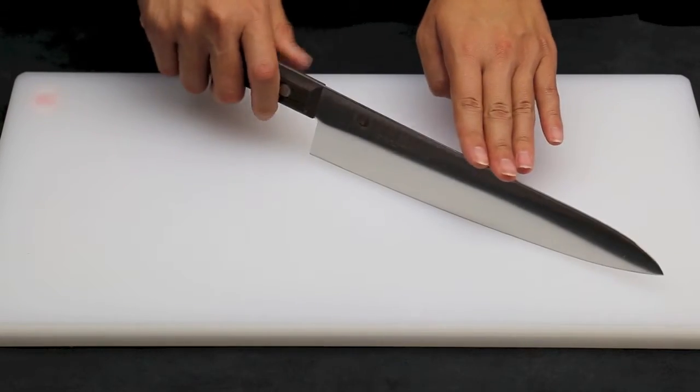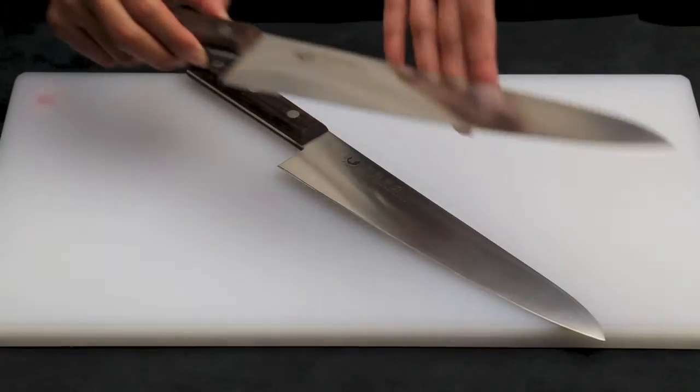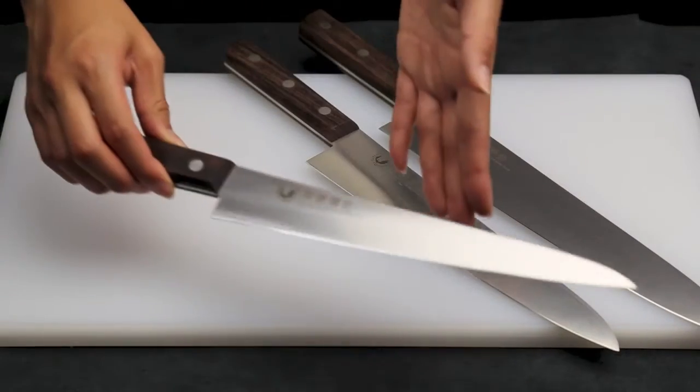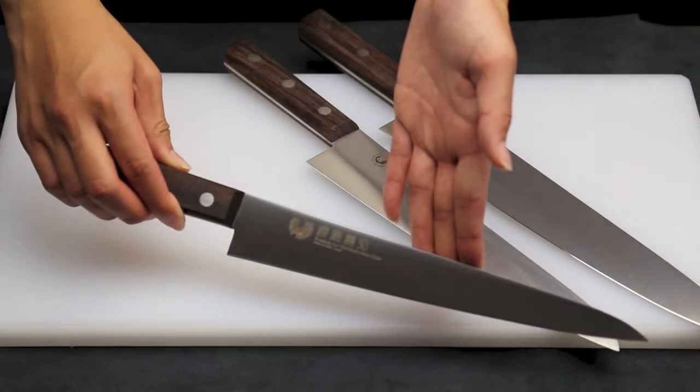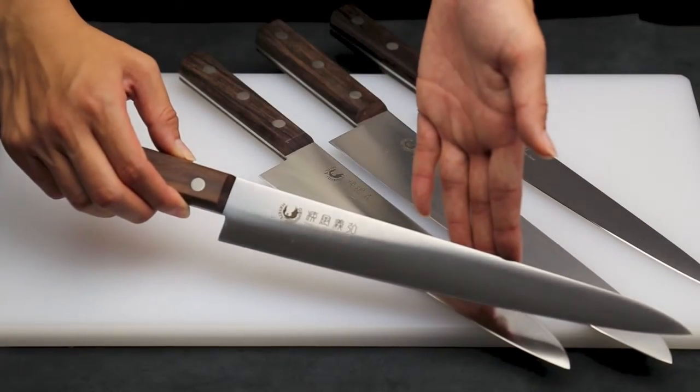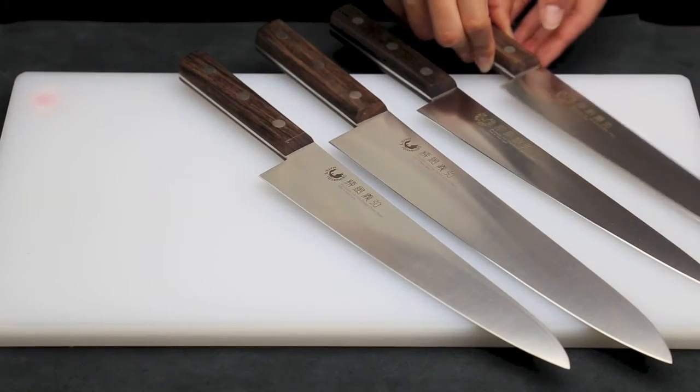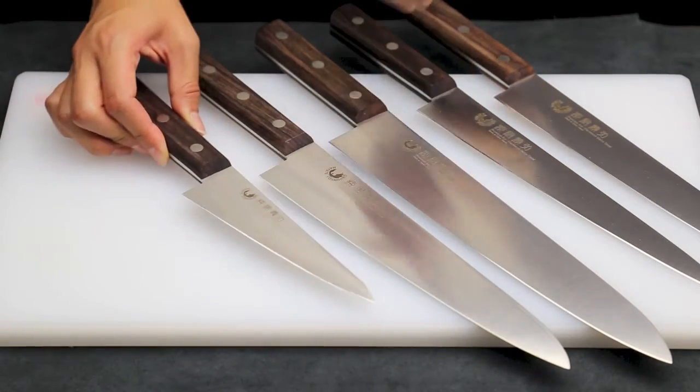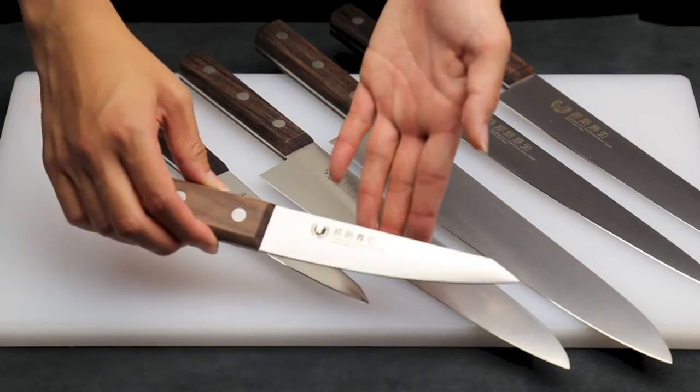This particular knife is a 240mm Gyuto knife, but there also is a 270mm, 240mm Sujihiki slicer knife, a 270mm slicer knife, a 150mm Sabaki boning knife, and another 150mm boning knife called a Hankotsu.